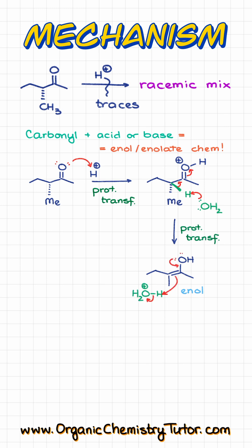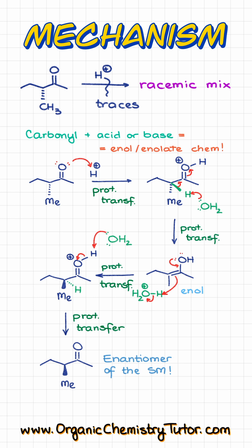If we reverse our equilibrium and start going back by re-protonating our enol, making the protonated intermediate and then doing the final proton transfer, this carbon can potentially reverse its stereochemistry and form the enantiomer of the starting material. Because this is an equilibrium and neither product is favored, we are going to end up with the racemic mixture.